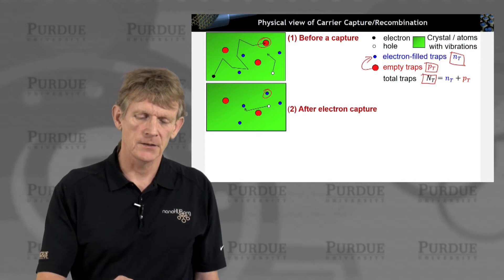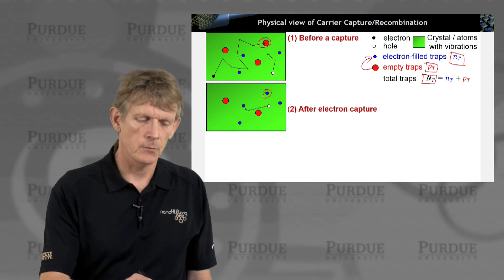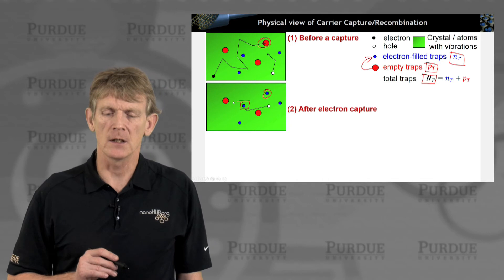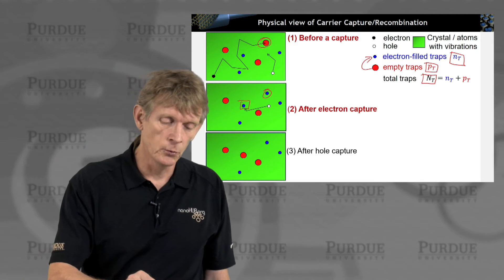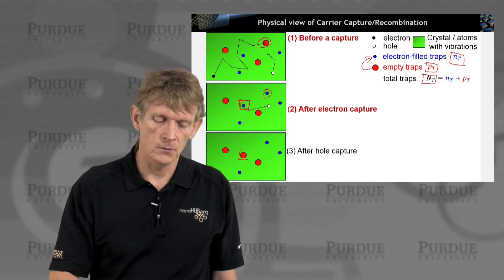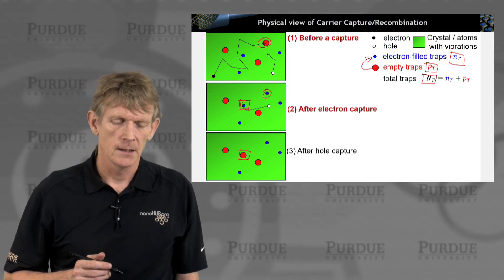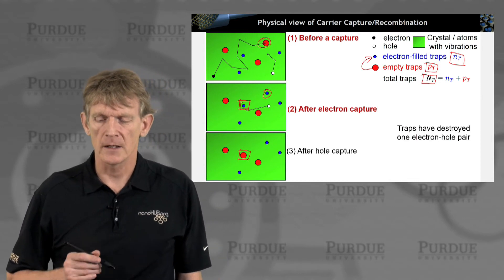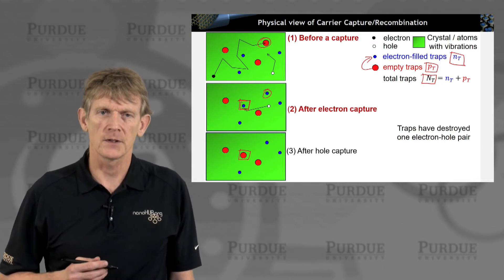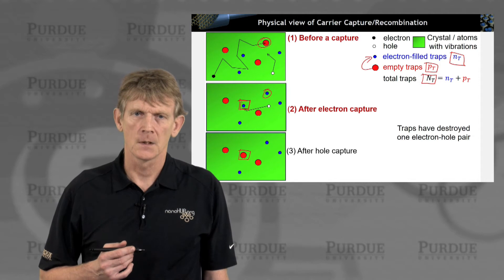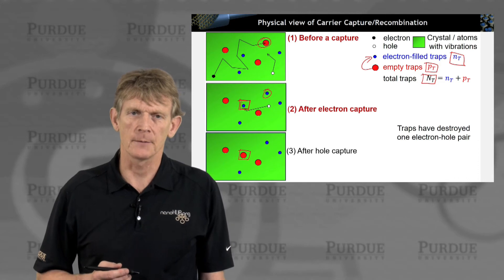Now, this hole still is zooming around. It can recombine with this blue electron-filled trap. So let it recombine, and then this blue electron-filled trap turns into a red empty trap again. So, at the end of all of this, we have these traps have destroyed one electron and one hole. So they destroyed one electron-hole pair. Overall, it doesn't have to happen at the same location. This is what the pictogram shows.